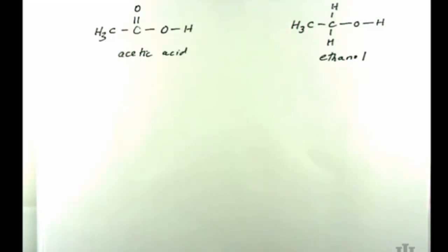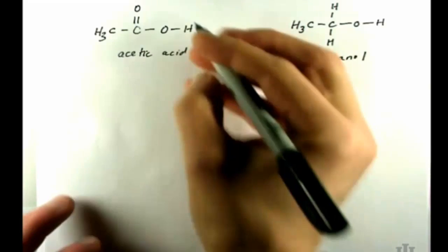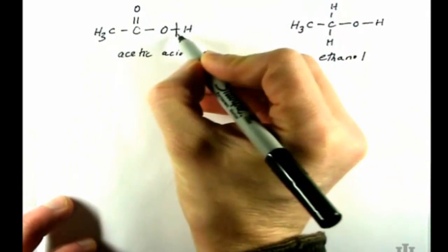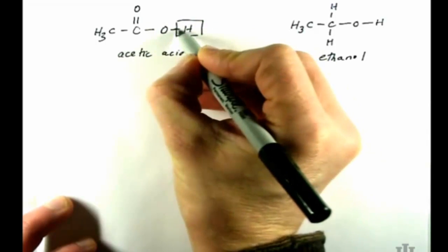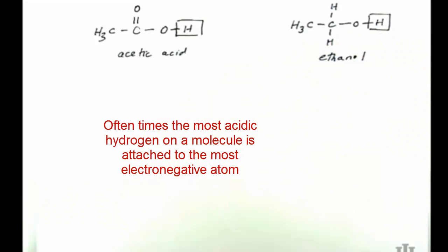Okay, so in this problem you want to think first about what type of hydrogen you're going to consider in this acidity problem. You're going to look for the hydrogen most likely attached to the most electronegative atom in the molecule, so it's going to be this hydrogen that I've put in the box here.